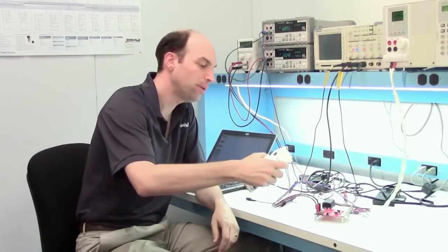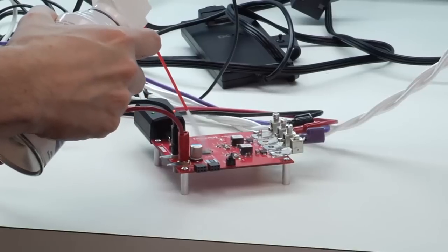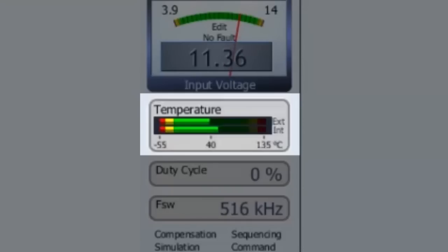To show how this can change we have a can of freeze spray here and we just simply freeze the device. You'll notice how right away within the GUI you can see the internal temperature dropping by several degrees C.